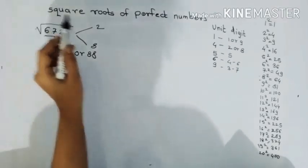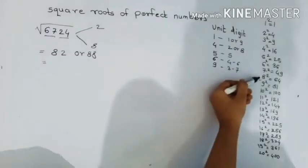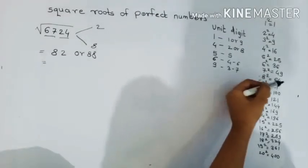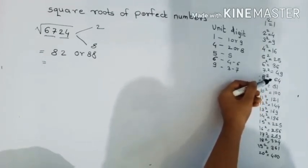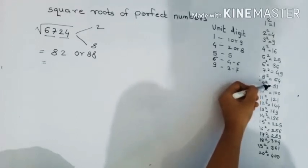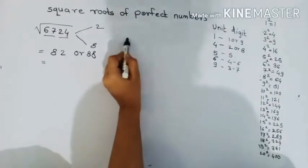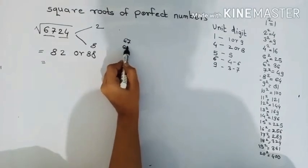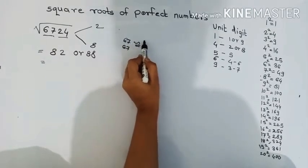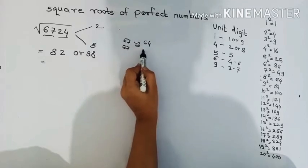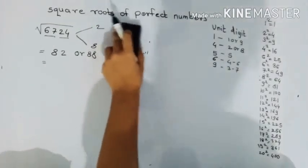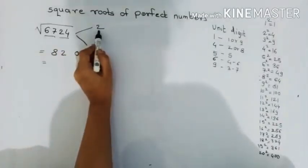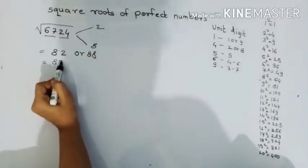This is our 67. It is under 8 and 9, then 64 and 81. Who is more than 67, 64 or 81? Obviously 64 is more than... 64 is less than 67. This means we will write it on the same page. We will write it directly on this page.